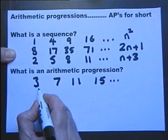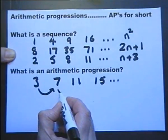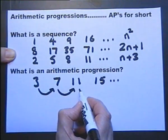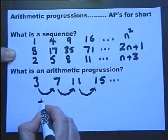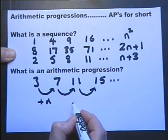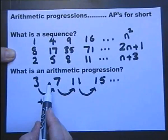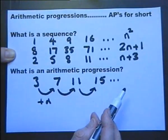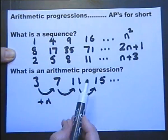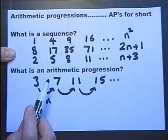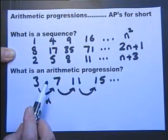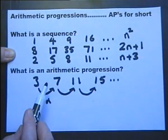This value that we're adding each time is called the common difference, and we usually denote that by the letter d. We could add a negative number each time, and we could start with a fraction rather than a whole number, but an arithmetic progression is a sequence that has a constant difference between successive terms.